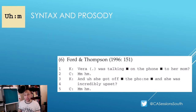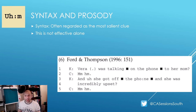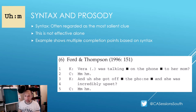There are multiple practices that can foreshadow that a turn is winding down and project an incoming TRP. The first two are syntax and prosody. Syntax is the most intuitive indicator — the completion of sentences, phrases, clauses, interjections and so on. However, syntax alone is ineffective in projecting the TRP. The example below illustrates two turns at talk with multiple completion points based on syntax alone, yet the recipient only contributes at the appropriate turn completion point.